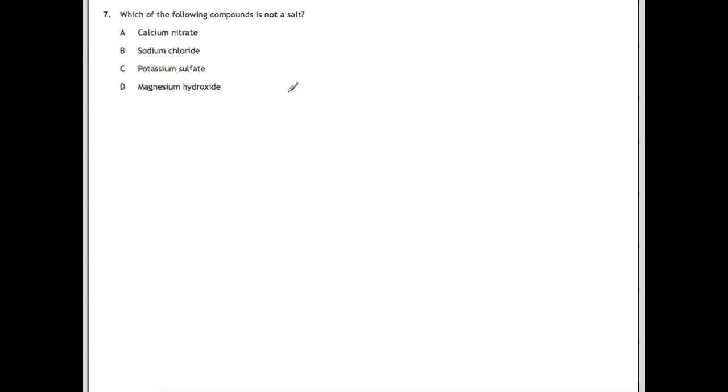Which of the following compounds is not a salt? If something is not a salt then it's hinting to you that it will be a base. Bases are either metal hydroxides, metal oxides or metal carbonates. We're looking for one of those within here and we have D magnesium hydroxide. That is our base which is not a salt.